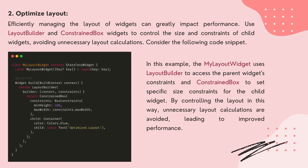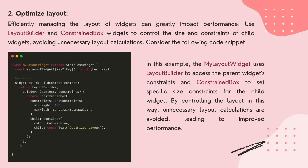2. Optimize Layout. Efficiently managing the layout of widgets can greatly impact performance. Use LayoutBuilder and ConstraintBox widgets to control the size and constraints of child widgets, avoiding unnecessary layout calculations. Consider the following code snippet. In this example, the MyLayout widget uses LayoutBuilder to access the parent widget's constraints and ConstraintBox to set specific size constraints for the child widget. By controlling the layout in this way, unnecessary layout calculations are avoided, leading to improved performance.